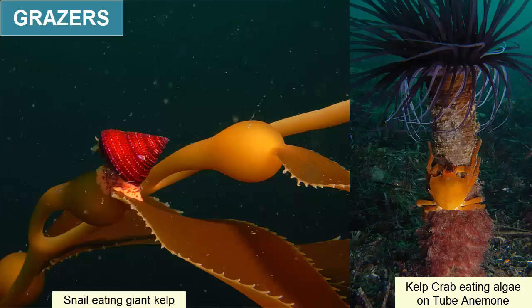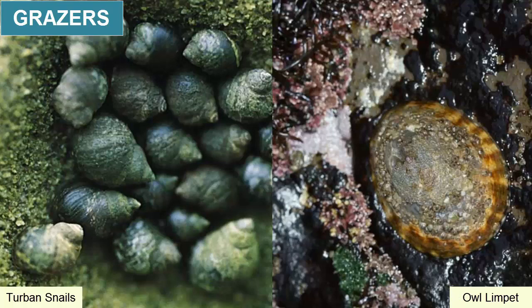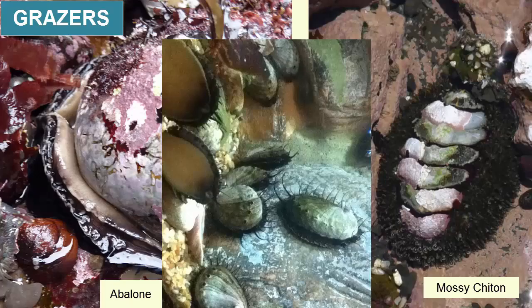Grazers are herbivores that feed directly off autotrophs, like isopods that feed on feather boa kelp, manatees that feed on seagrasses, and purple sea urchins that feed on the holdfasts and stipes of giant and bullwhip kelp. Grazers also include snails, chitons, limpets, abalone, and other organisms that feed by scraping algae off rocks.